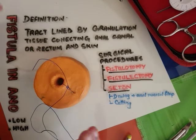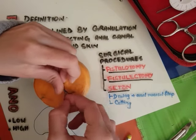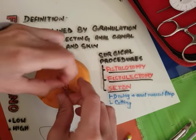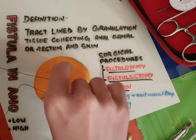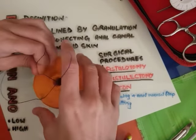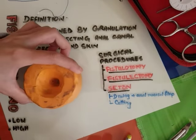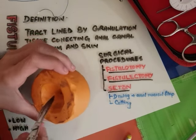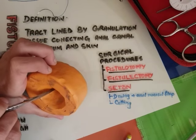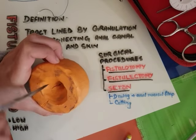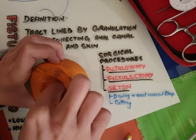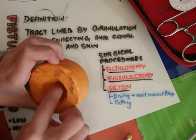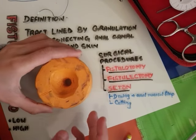The draining seton can be removed after about three to four months when it is ensured that the fistula is free of infection. After removing it, you can close the internal opening through an anal mucosal flap. The seton is removed and then through the anal opening — this was the internal opening — you create a V-shape mucosal flap and re-suture it by extending it over the internal opening, so you close the internal opening. In this way the fistula heals.